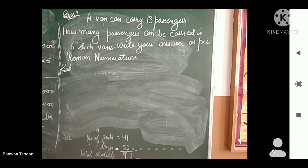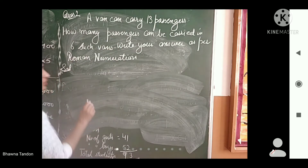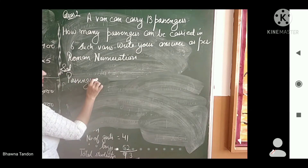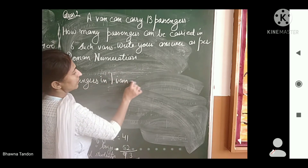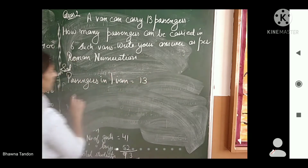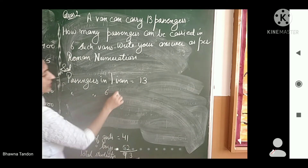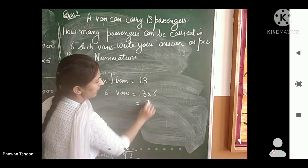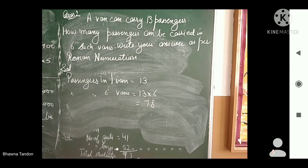You will figure out that in one van there are 13 passengers, so in six vans there will be 13 multiplied by 6, which equals 78. So the passengers who can travel in six vans will be 78.